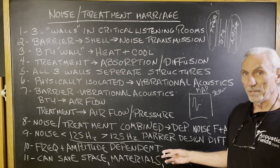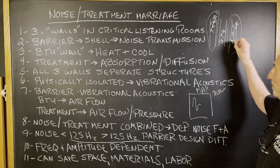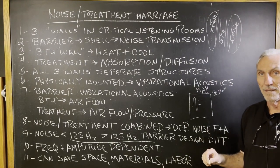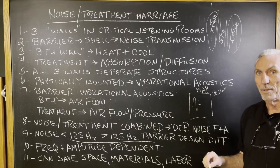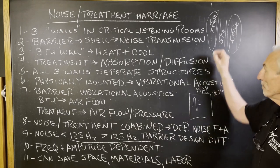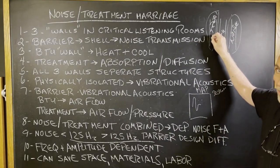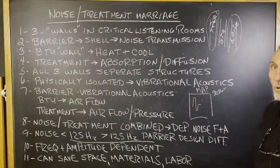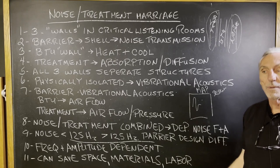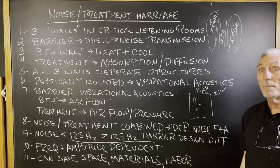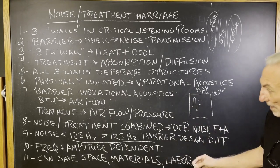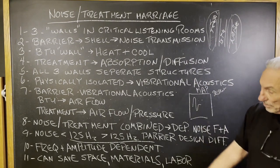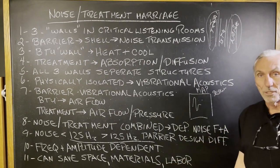Everything we do in the barrier and the treatment wall is frequency and amplitude dependent. The absorption and diffusion we use inside the room is frequency and amplitude dependent. With noise, it's frequency and amplitude dependent on the materials we use in the barrier. So it all has to be measured. Combining the two, if you can, is a good way to save space, materials, and labor.